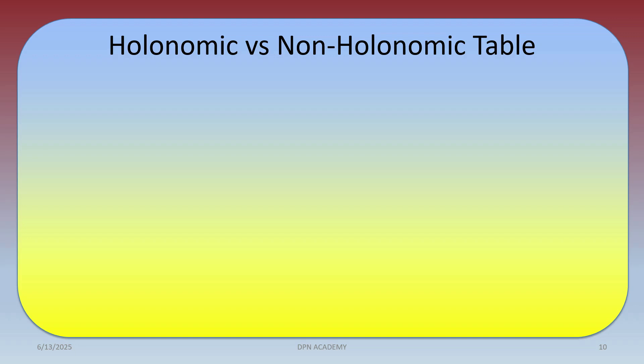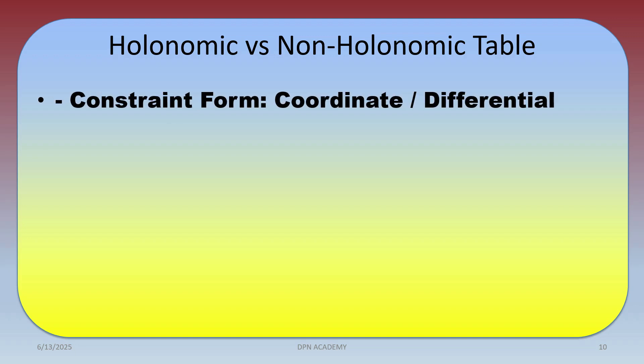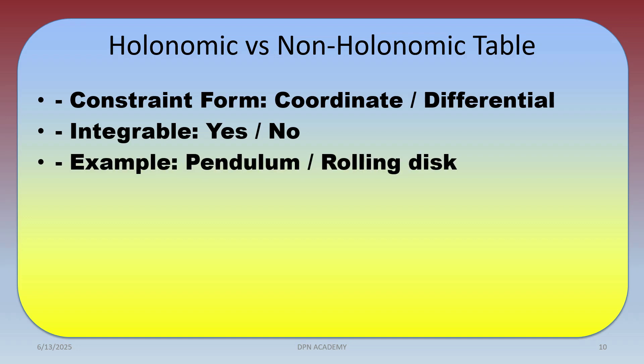Comparison table for holonomic versus non-holonomic systems: the constraint form is a coordinate equation for holonomic and a differential equation for non-holonomic. Holonomic constraints are integrable; non-holonomic constraints are not integrable. The pendulum is an example of a holonomic system, and the rolling disc is an example of a non-holonomic system.